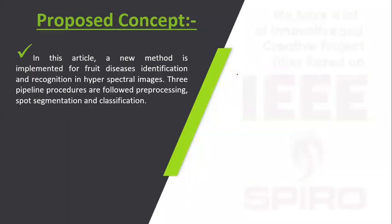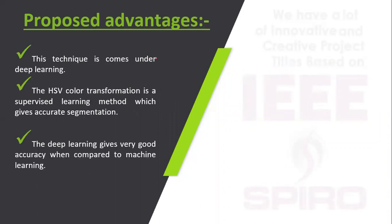In our proposed system, we are using deep learning for the detection of diseases in hyperspectral images. If you use deep learning, it requires less steps to run when compared to the existing system, and it is an advanced technique in order to make our system high accuracy.